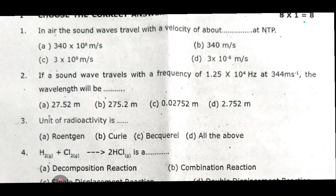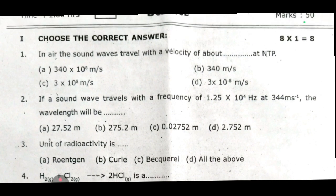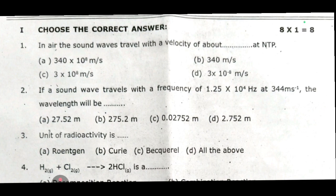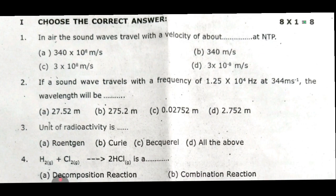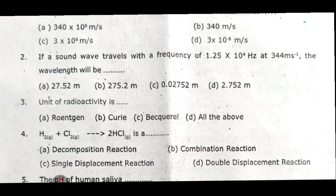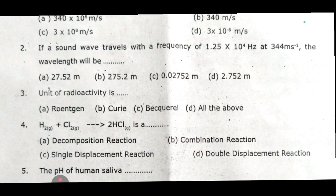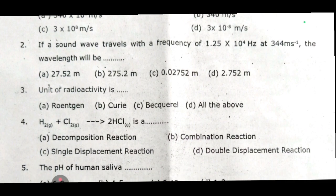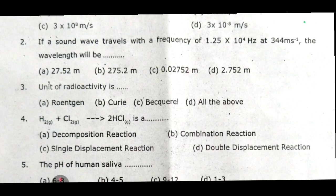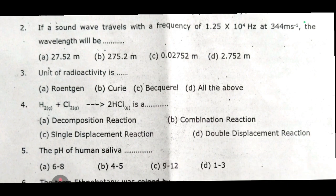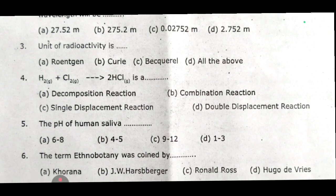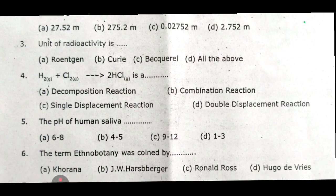You can check the questions and see the answers. First one: in air, the sound waves travel with a velocity of about dash at NTP. Second one: if a sound wave travels with a frequency of 1.25 into 10 to the power of 4 hertz at 344 meters per second minus, the wavelength will be dash. Third one: the unit of radioactivity is dash.